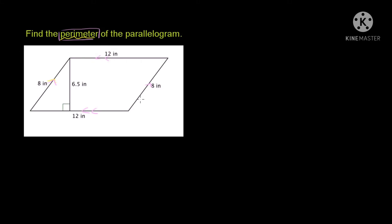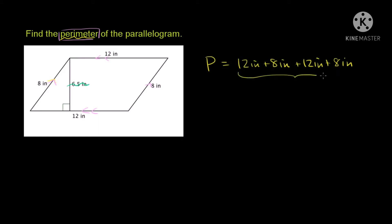Here the sides are 12 inches, 8 inches, 12 inches, and 8 inches. So, perimeter is equal to 12 plus 8 plus 12 plus 8. We add: 12 plus 8 is 20, 20 plus 12 is 32, 32 plus 8 is 40 inches. So, perimeter of the parallelogram is 40 inches. Perimeter is the sum of the lengths of the four sides.